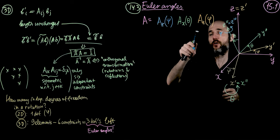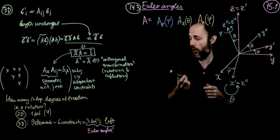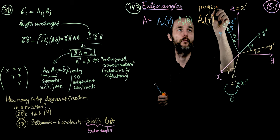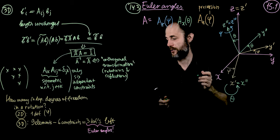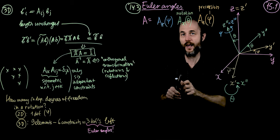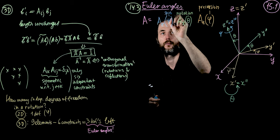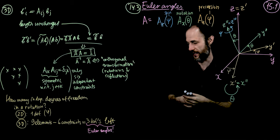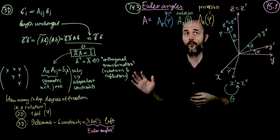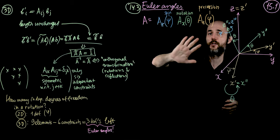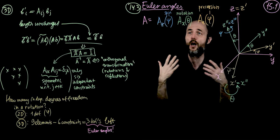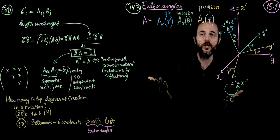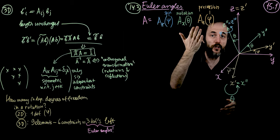The physical meaning of each Euler angle will become clear. The first rotation, phi, is precession. The second, theta, is nutation. And the last one, psi, is spin. Each of these is a rotational matrix: the first around z, the second around x, and the third again around z.